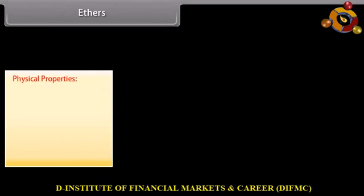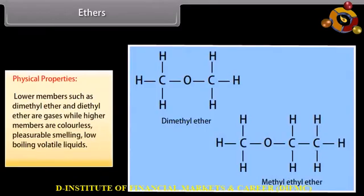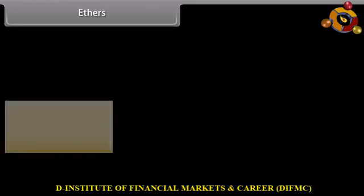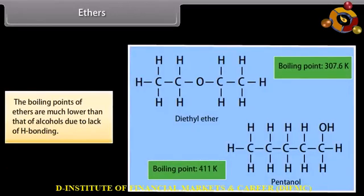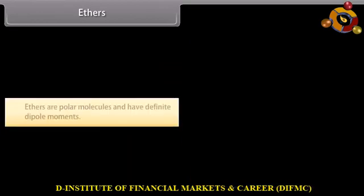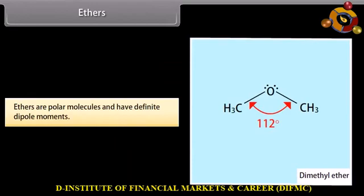Physical properties of ethers: lower members such as dimethyl ether and diethyl ether are gases, while higher members are colorless, pleasant-smelling, low-boiling volatile liquids. The solubility of ethers is comparable to those of corresponding alcohols, due to the capability of oxygen to form hydrogen bonds with water molecules. The boiling points of ethers are much lower than those of alcohols due to lack of hydrogen bonding. Lower ethers act as anesthetics. Ethers are polar molecules and have definite dipole moments.